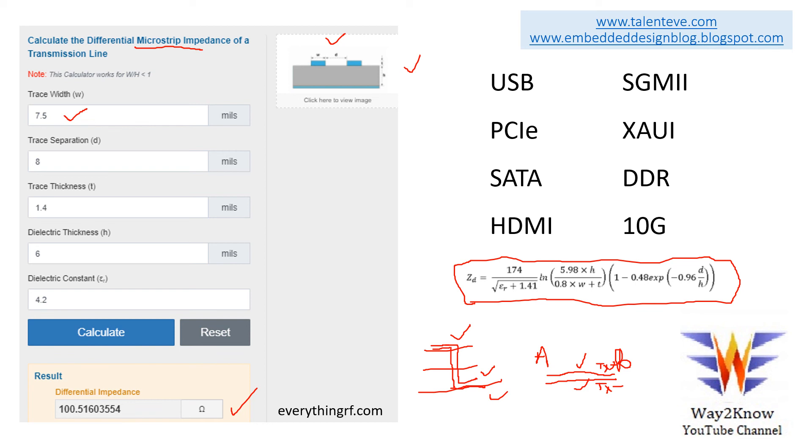One more point with respect to this length matching is, in reality if you see the boards, these are very dense boards. Dense boards in the sense means there will be huge components that will be placed on top, populated on the board, and you have very minimal space to route. So you generally use the inner layers. It is very difficult that ideally a signal from A to B goes directly on the top layer. You will route this to the bottom layer, and the lengths of TX plus and minus should be perfectly matched.